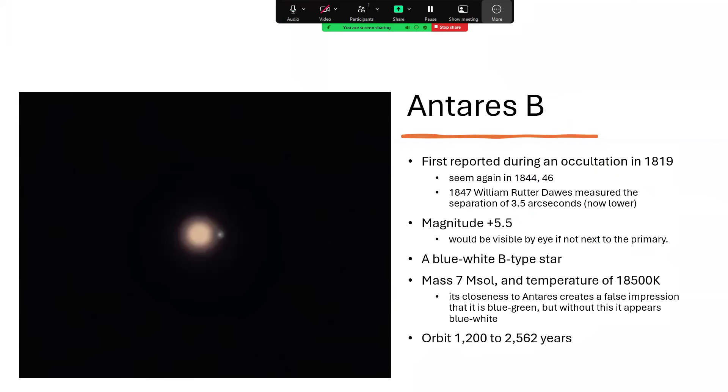It has a companion. And there's a lovely photograph of Antares with its companion, the B star next to it, first reported during an occultation when the moon passed in front of Antares and blocked out the light from the main star, revealing this little magnitude 5.5 companion.